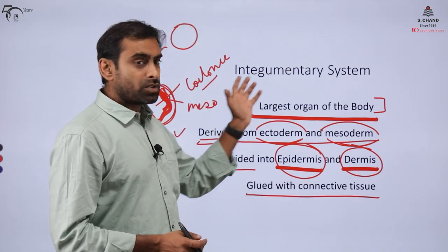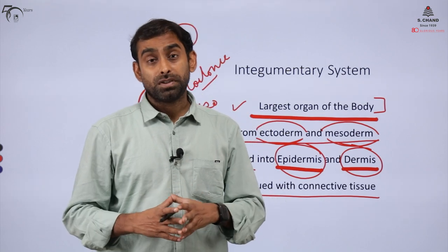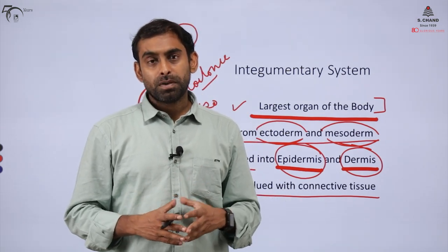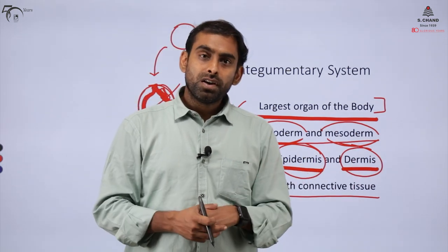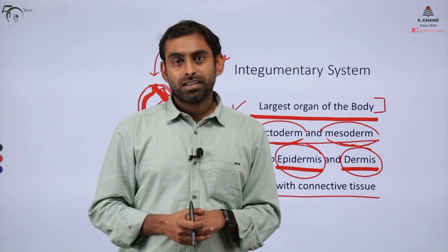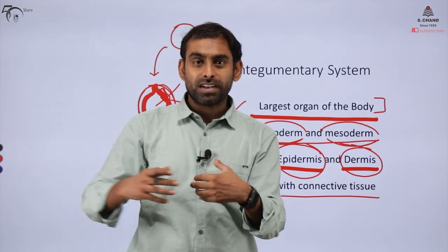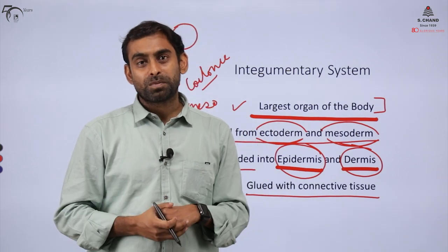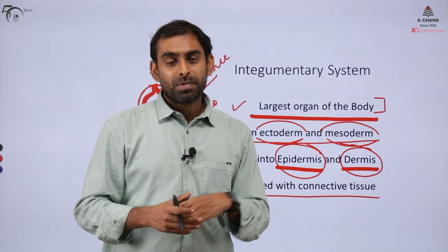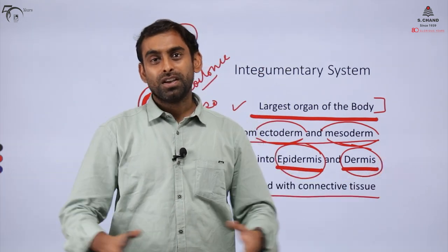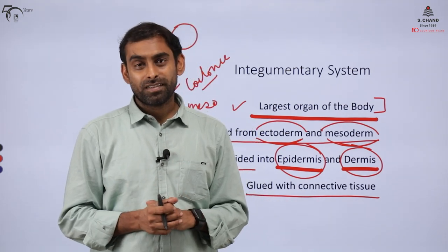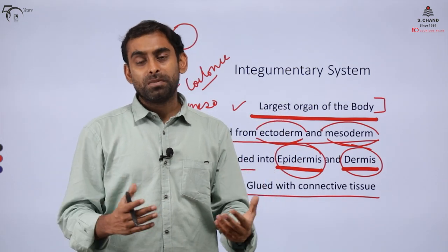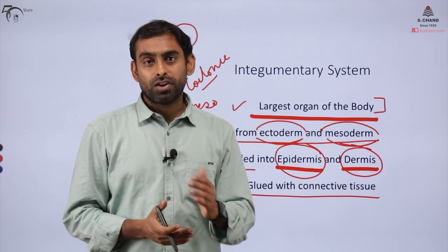The purposes of the integumentary system are diverse. The primary purpose is protection — it protects us from external environmental changes. Imagine what would happen if water were absorbed by your body parts when you shower. All the body tissues would shed off. Our skin is highly hydrophobic, which protects the inner organs from external environmental differences.